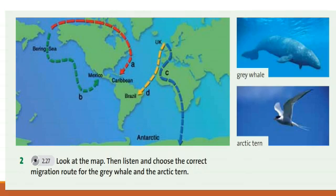Track 2.27, exercises 2 and 3. Every year gray whales migrate from the Bering Sea in the Arctic to the Pacific Ocean near Mexico. They make this journey between October and January to breed in the warm sea. Their journey is 9,000 kilometers and it takes three months.